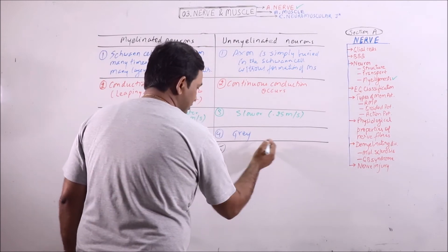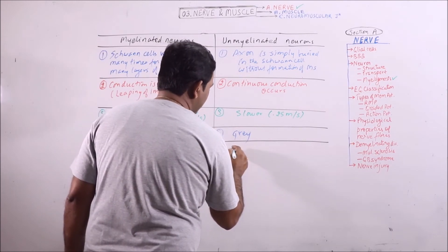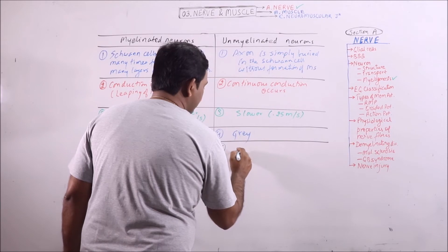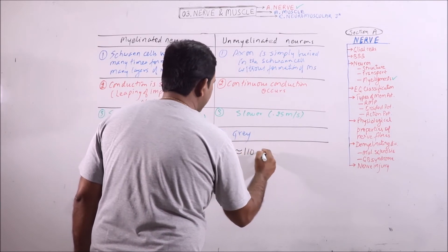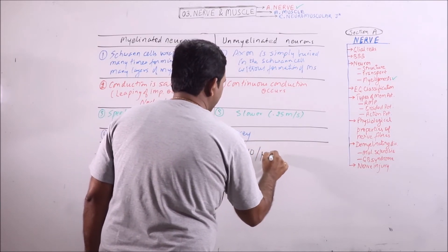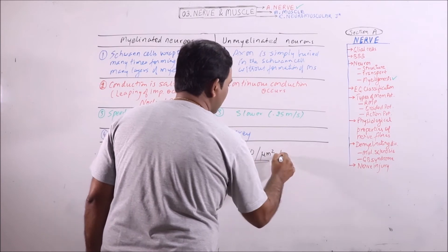While in case of non-myelinated neurons, the number is approximately 110 per micron square along the axon.